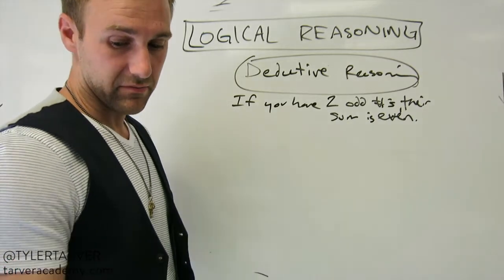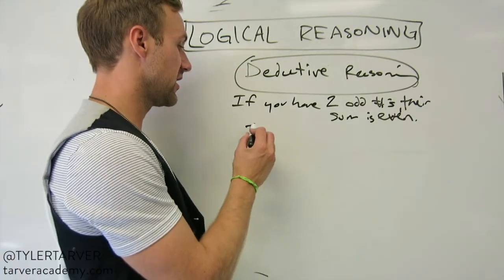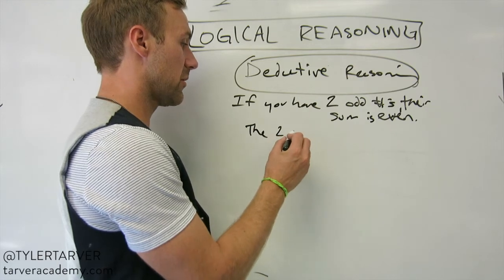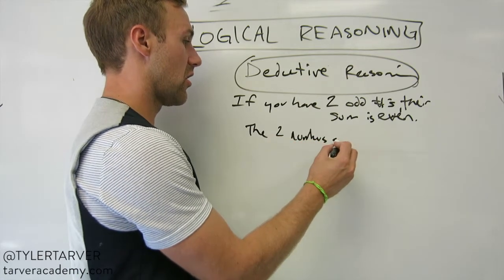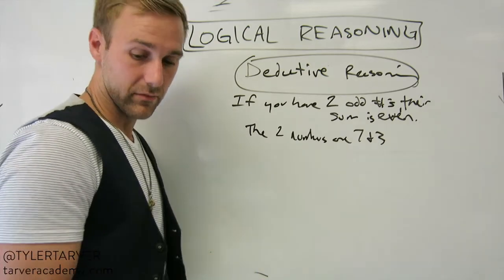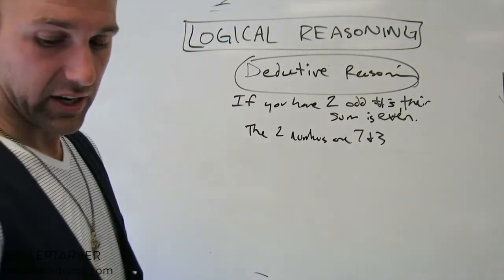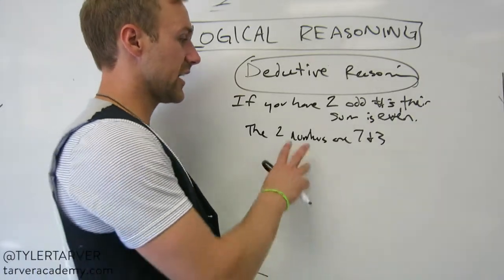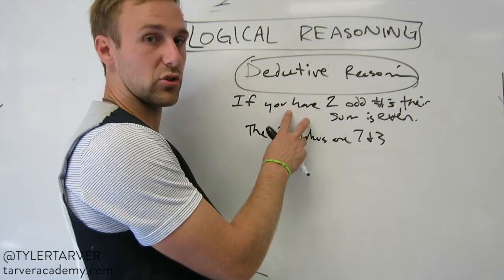essentially I would take an answer saying the two numbers are seven and three. Are those both odd numbers? Yeah. Okay, well good. Well then I would put it together and see if it is correct. So I take this and I figure out if this is true.